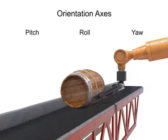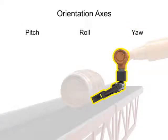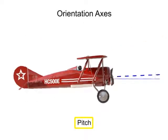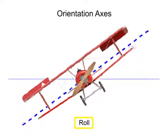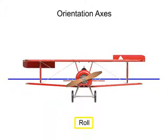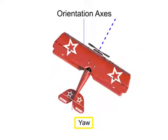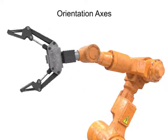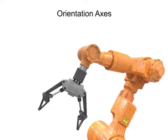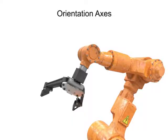These movements all occur from the same joint, the wrist, but along three distinct axes. This type of movement is most easily illustrated as it relates to aircraft movement. The robot's tool moves in the same way. Pitch moves the tool vertically. Roll rotates the tool about its center axis. Yaw turns the tool left and right.